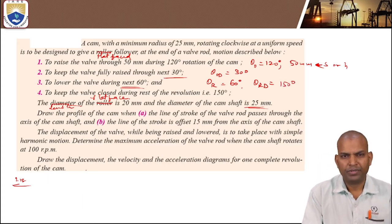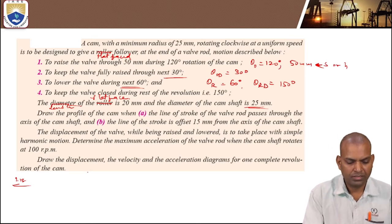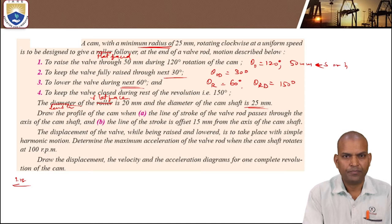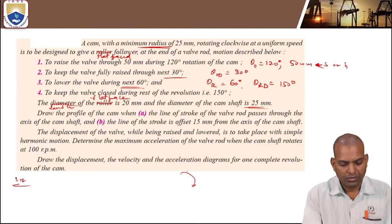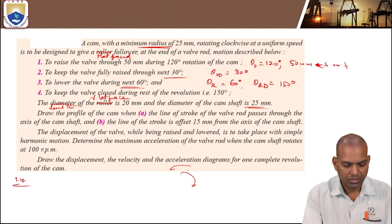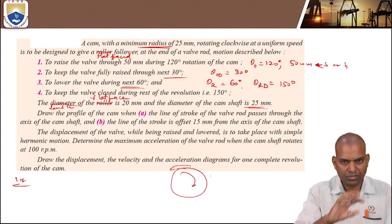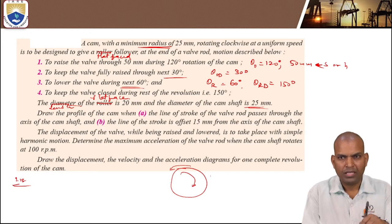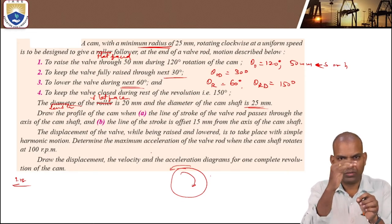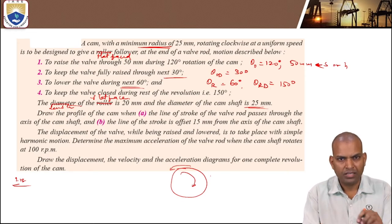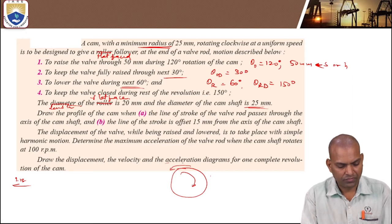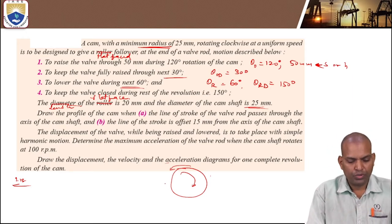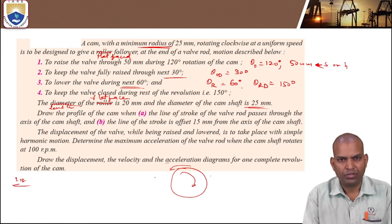The minimum radius of the cam is 25 millimeters. It is rotating clockwise. When it is rotating clockwise, the follower moves in the opposite direction. The cam is rotating and the follower remains in contact, but we have to follow the anti-clockwise direction. That is because it is a flat-faced follower. So before going to draw the cam profile, we need the prerequisite: a displacement diagram.